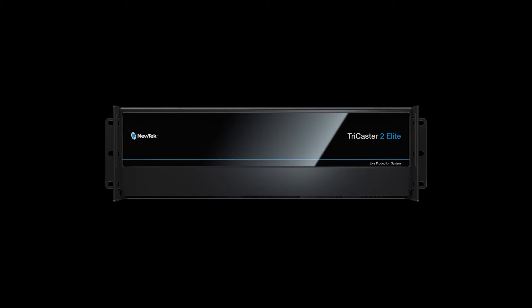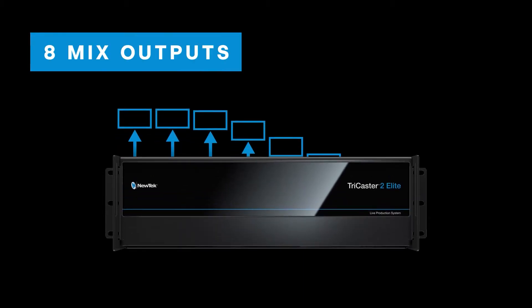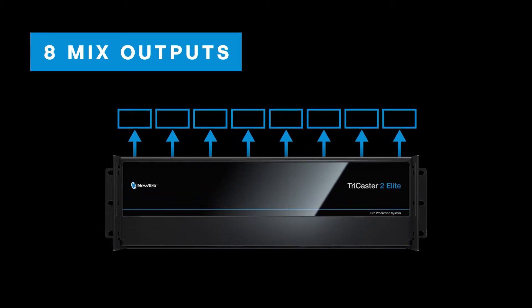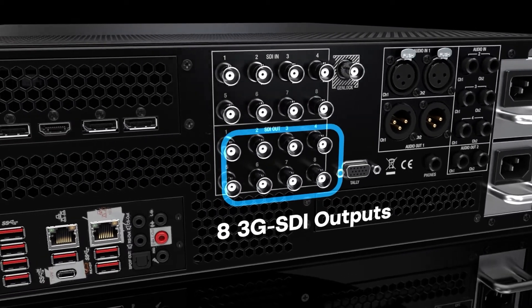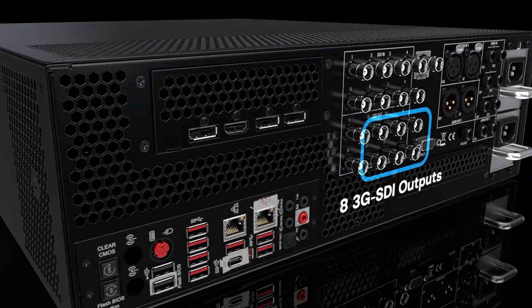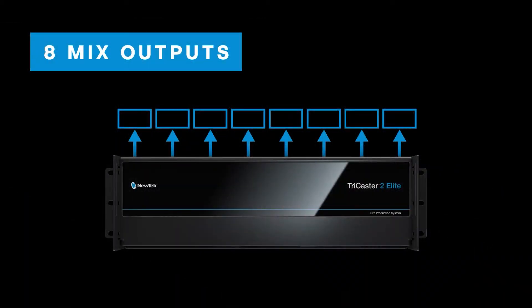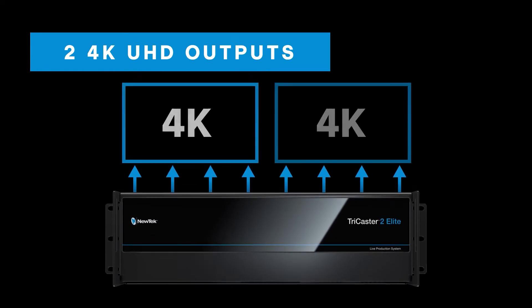Once your show is ready to deliver to your audience, TriCaster 2 Elite gives you more options than ever to distribute your content. With 8 individual outputs, you can produce multiple video programs from one system. Output your show through the 8 1080 60p 3G SDI hardware outputs for connecting to monitors, projectors, video walls, digital signage, and more — with the flexibility to output 2 4K Quad Link Ultra HD connections.